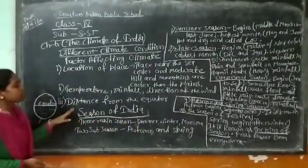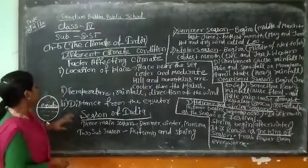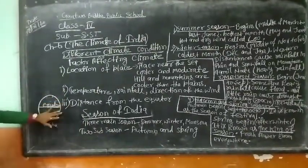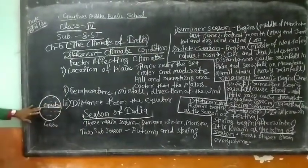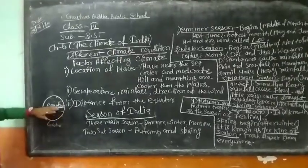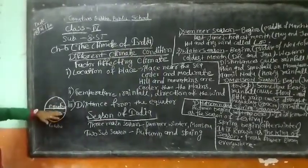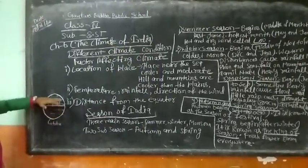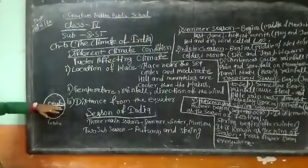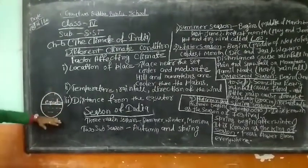We have to explain the distance from the equator. The distance from the equator is where we are going to grow. As the equator expands the distance, it is going to be more cold, and the sun will be more cold.